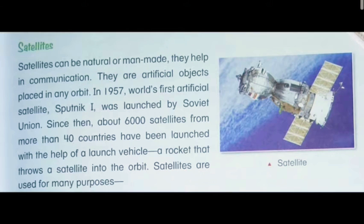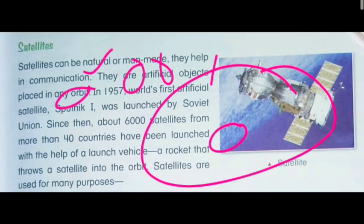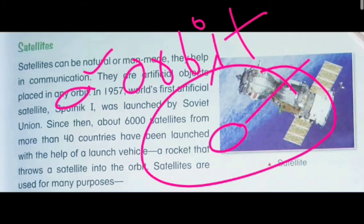Okay, dear students. Satellites are artificial objects placed in any orbit. You know, the orbit of Earth — here, Earth has its own orbit. We call this orbit in Hindi 'Krittim'. Krittim means artificial. So an artificial satellite is one made by humans — manusha dwarah.